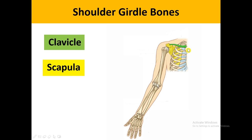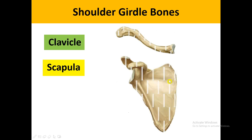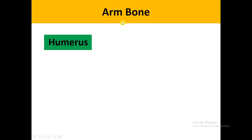Let's talk about the shoulder girdle bones. We have the clavicle and the scapula. The clavicle is represented in green color and the scapula is represented in yellow color. These two bones together make the shoulder girdle.